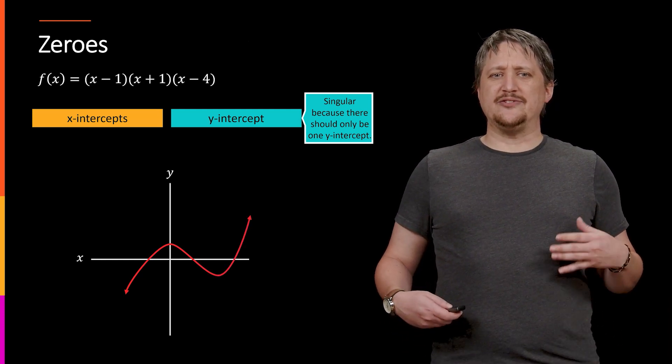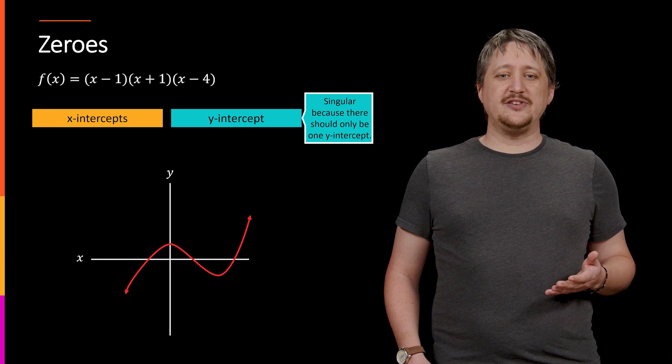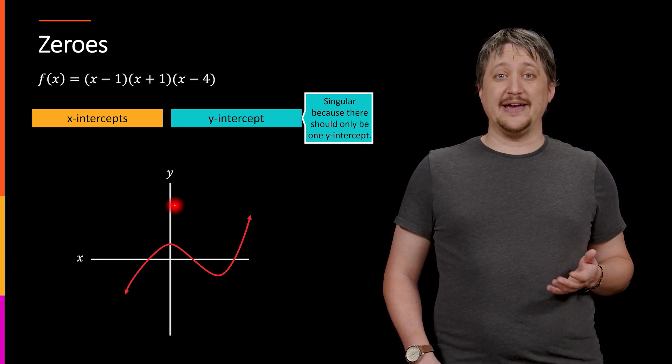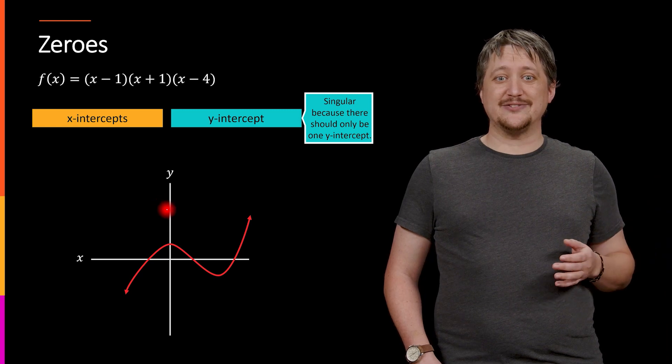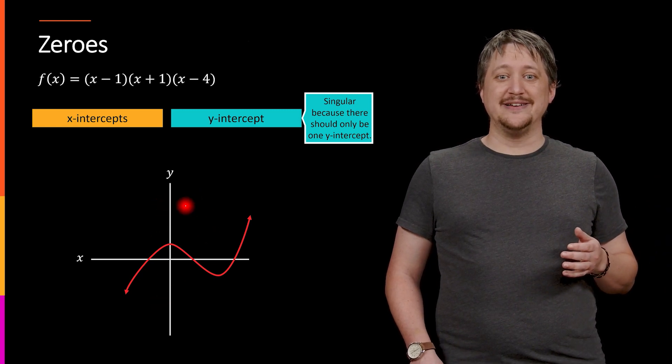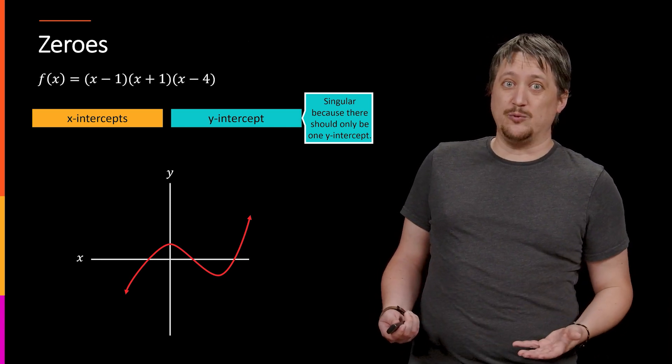The reason for that is we're dealing with functions here and the y-intercept is where you're hitting the y-axis. If you remember from the vertical line test, a vertical line can only hit the curve in one spot if it's going to be a function. So you can only have one y-intercept.